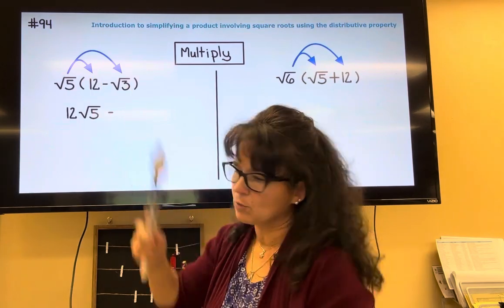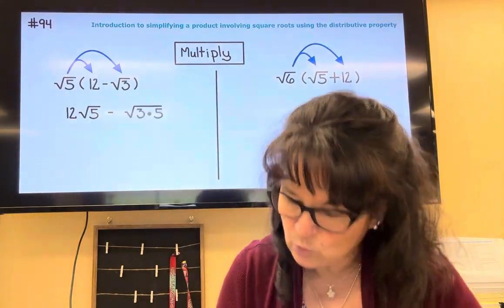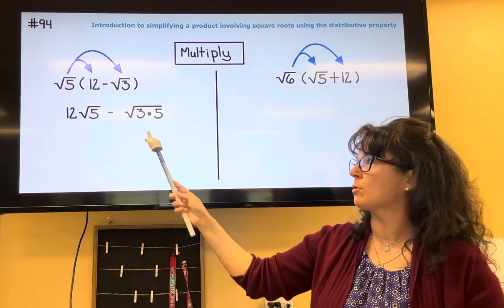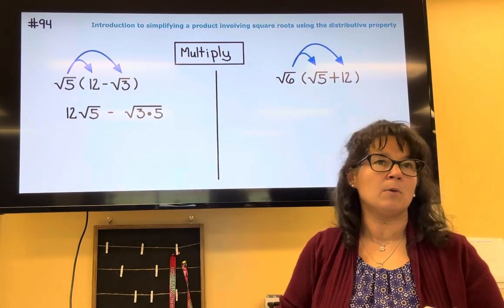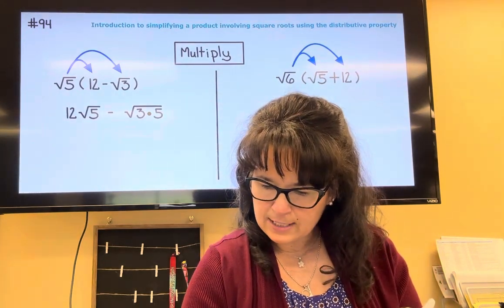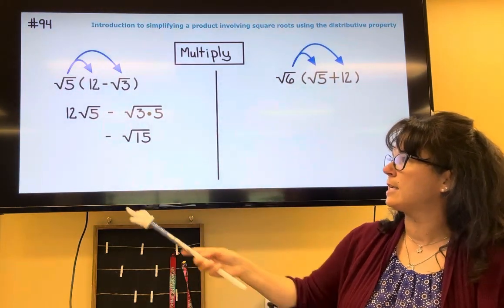So in other words, root 5 times root 3 is the square root of 3 multiplied by 5 underneath the root. We can go ahead and multiply those together. 3 times 5 is 15, so this is the same thing as minus the square root of 15.